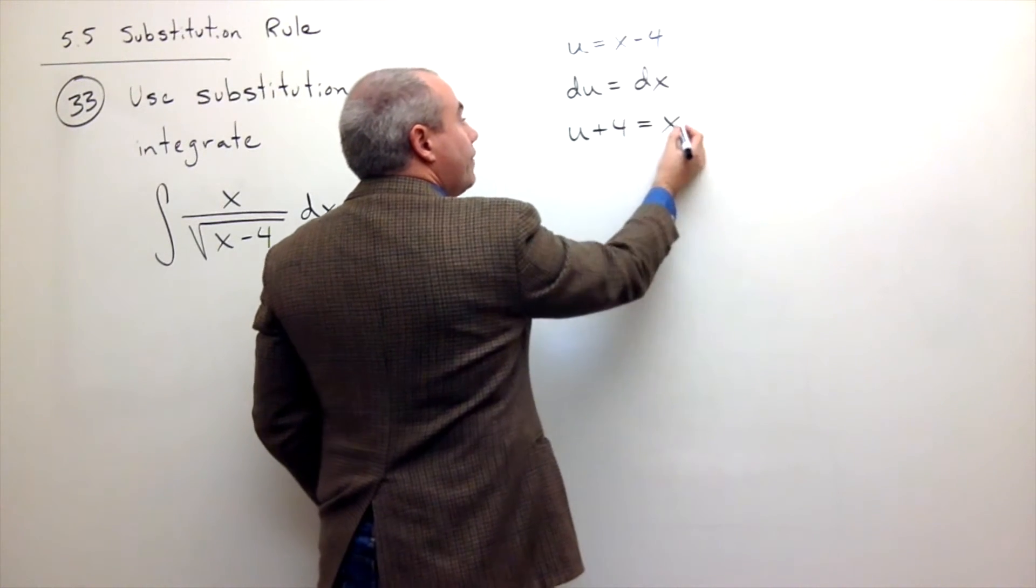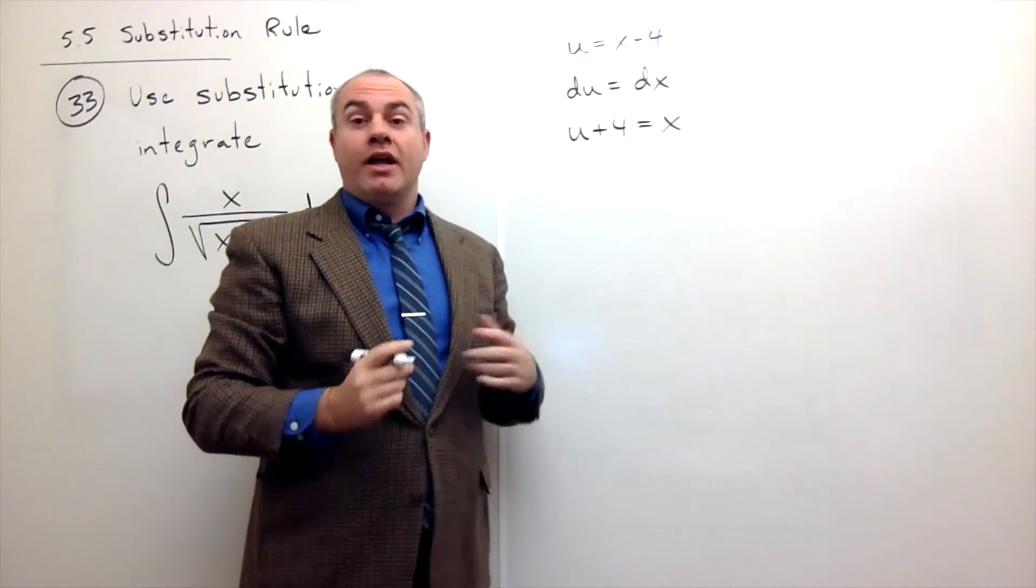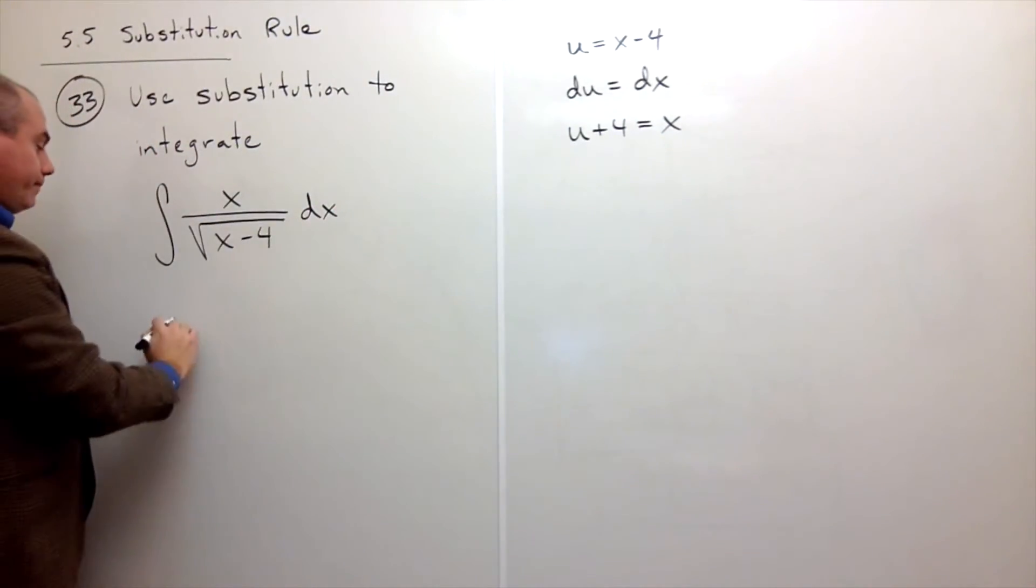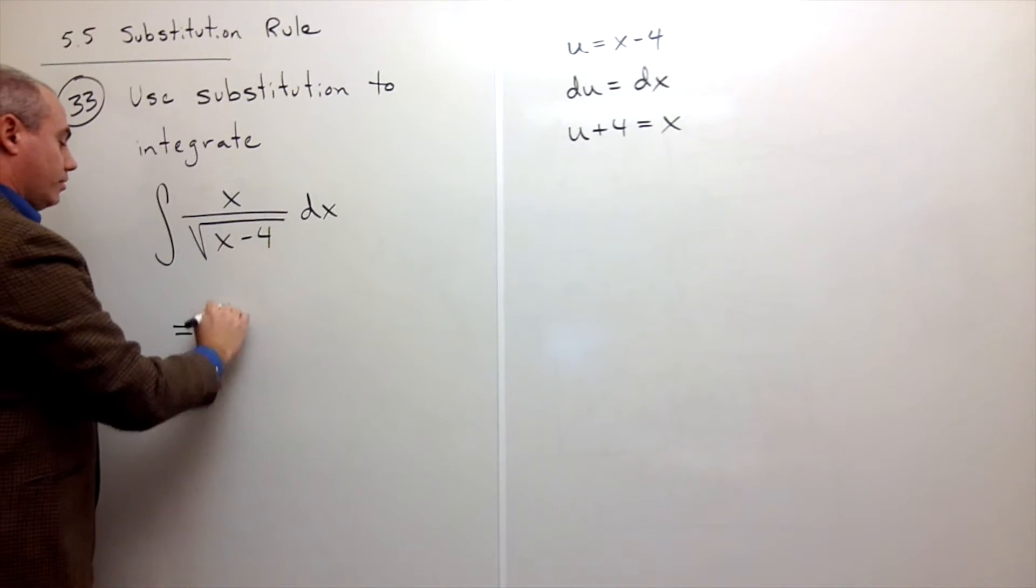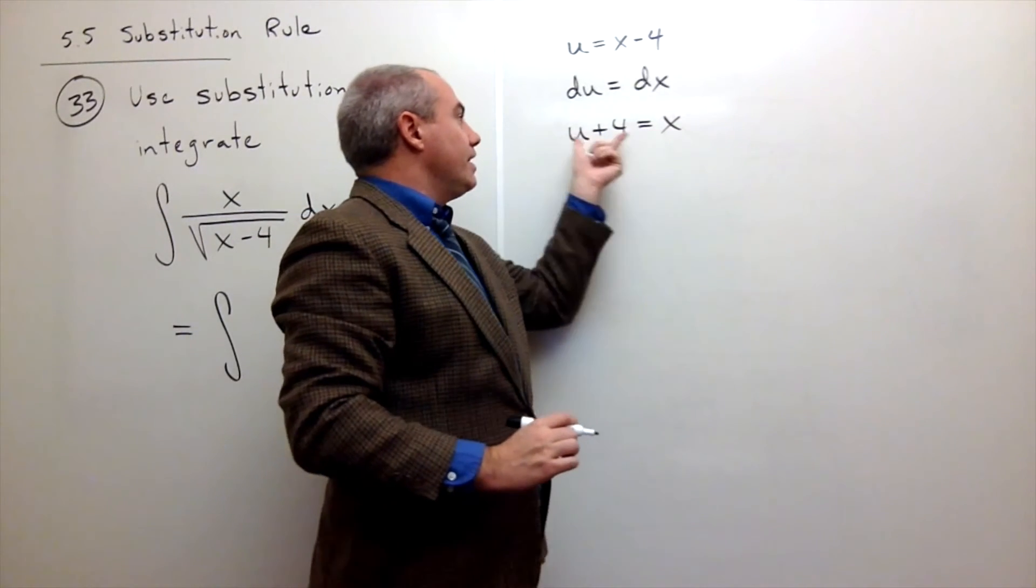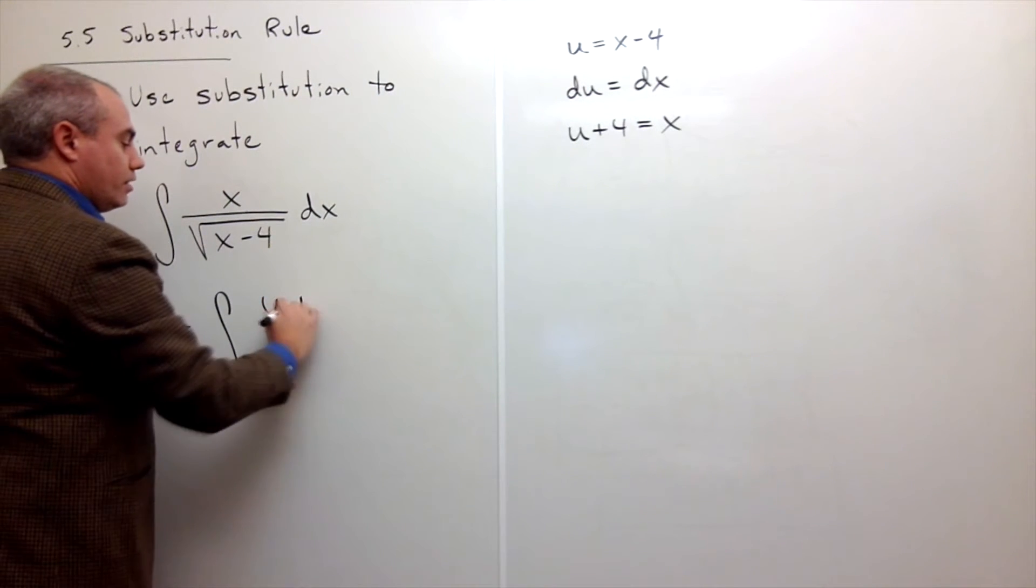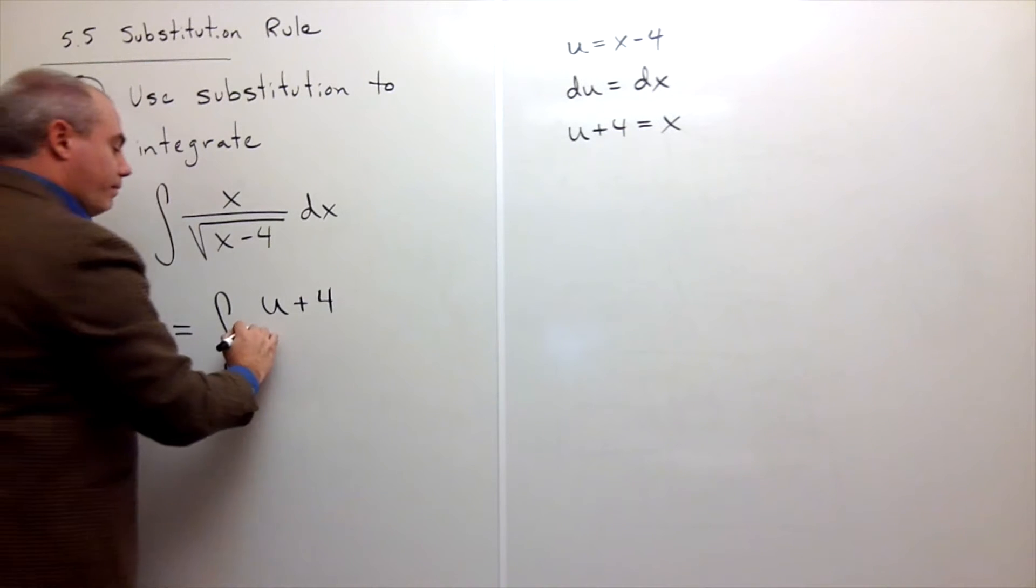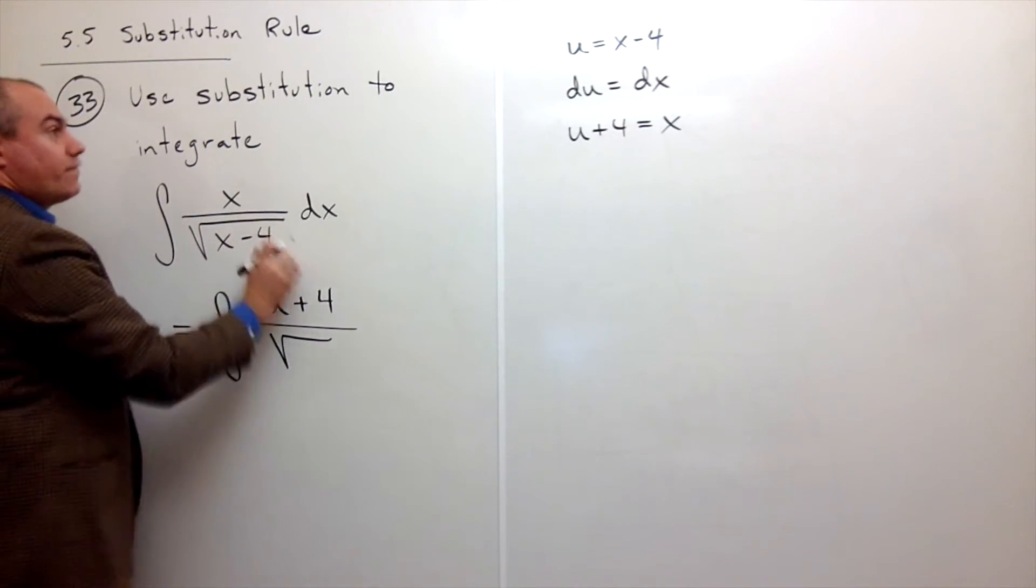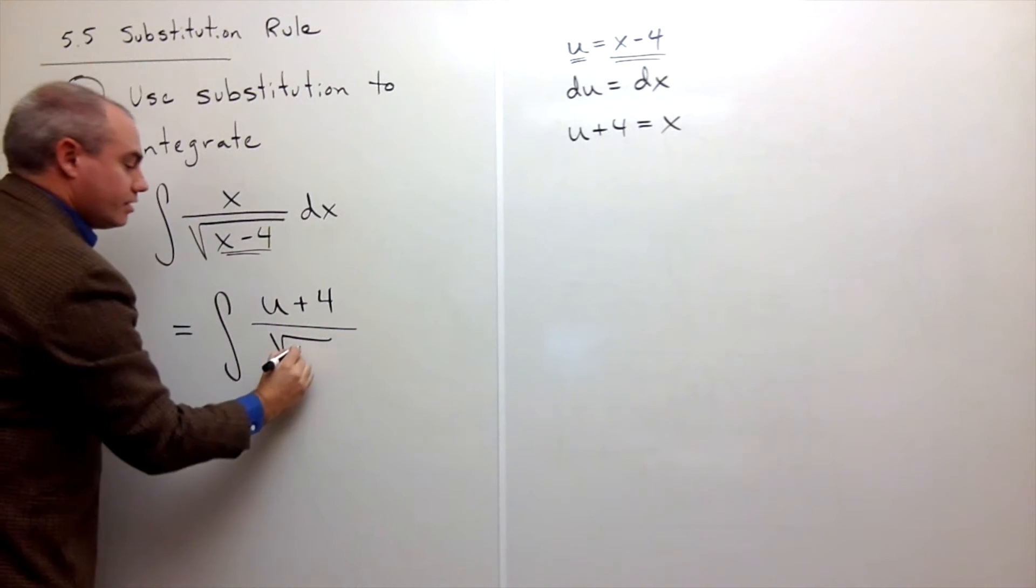So this is the key. That extra x hanging out, I can just replace it by u plus 4 and everything's fine. Let's do it. I'll rewrite this thing. This is the integral of, on top I have x, which is actually u plus 4. So I'll rewrite it as u plus 4. On the bottom, I have the square root of x minus 4, but x minus 4 is u.